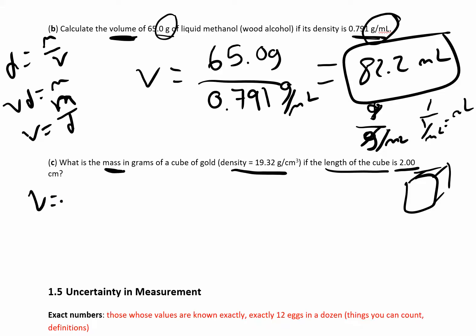All right, so volume is going to be, I have 2.00 centimeters cubed, right? So 2 times 2 times 2 is going to give me 8 centimeters cubed. 8 centimeters cubed. That's my volume. Length times width times height. And then they give me the density. So I have volume times density. So I'm basically using this equation. Volume times density should give me mass.